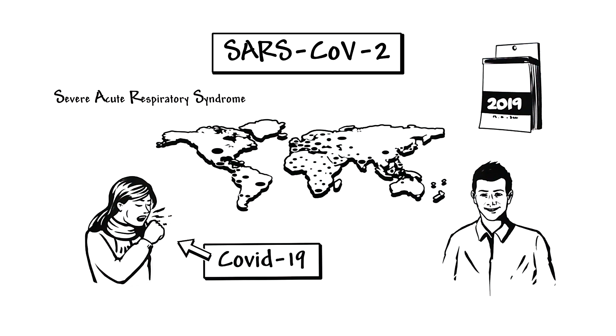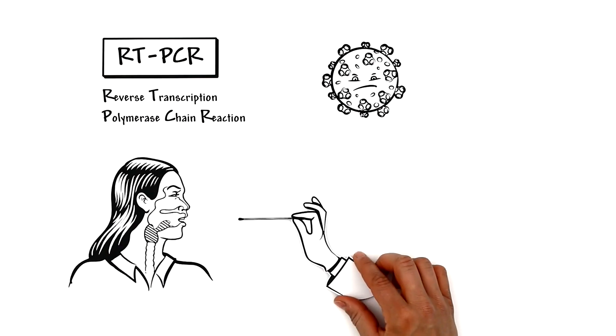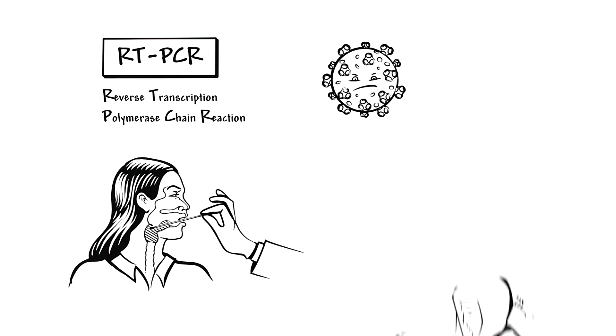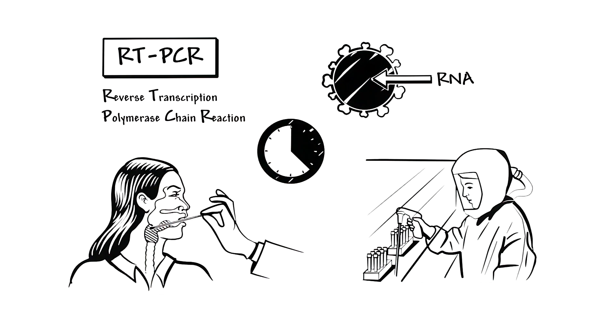One way to detect the SARS-CoV-2 virus in people is the so-called RT-PCR test. This method involves taking mouth, nose, or throat swabs from the patient. In a lab, these swabs are analyzed for traces of RNA, which is the viral genome. The analysis takes about 4-5 hours and is pretty pricey.